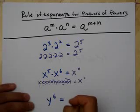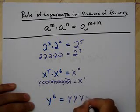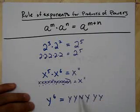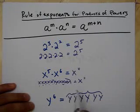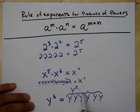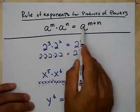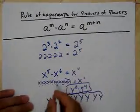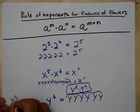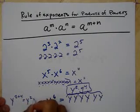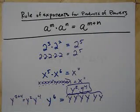Now, can I write y to the 6th differently? Yeah, because I know this is 6 y's. I could grab some of them and put them together. We call this y squared times y to the 4th. So just like x to the 5th times x to the 6th equals x to the 11th, I could take y⁶ and write it as y to the 2 plus 4, which equals y² times y⁴. It's forward-backwards mathematics.